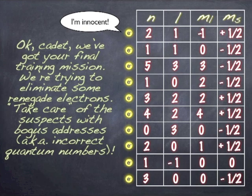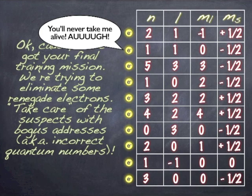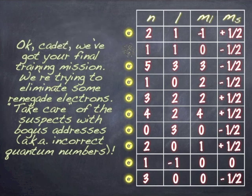So take a look at the second one. What do you think? Legit or not legit? That's right, not legit. N can be 1, but if N is 1, L cannot be 1, right? Because it can be anything from 0 to N minus 1. So right off the bat we know that can't happen. That would mean that on the first energy level you have a P subshell and that certainly can't happen. So that one's out. Out of here, buddy.